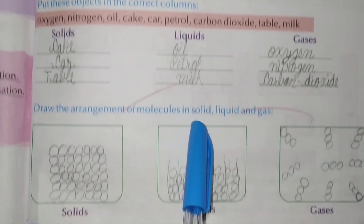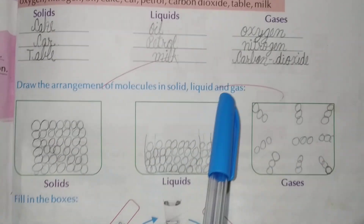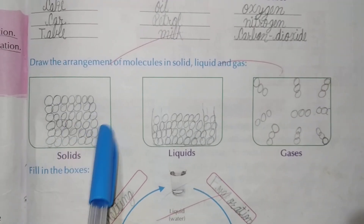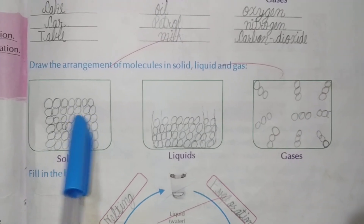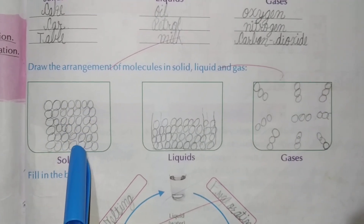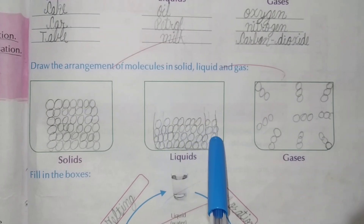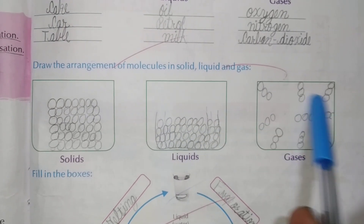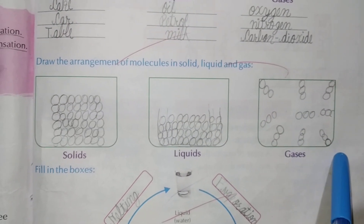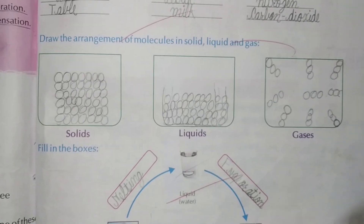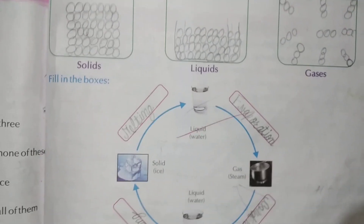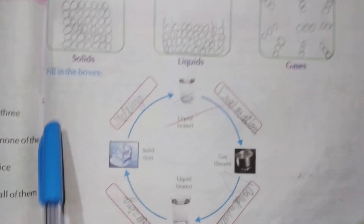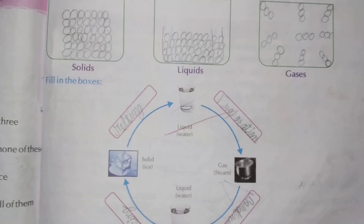Okay students, draw the arrangement of molecules in solid, liquid, and gas. Draw like this: molecules are closely packed in solids, a little bit of space in liquids, and a lot of space in gases.